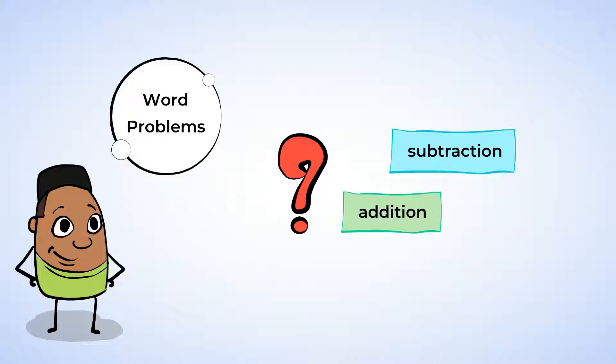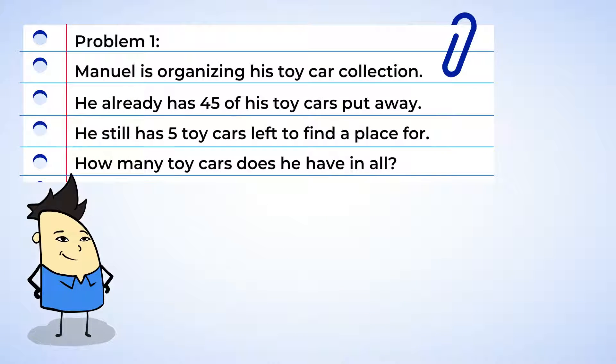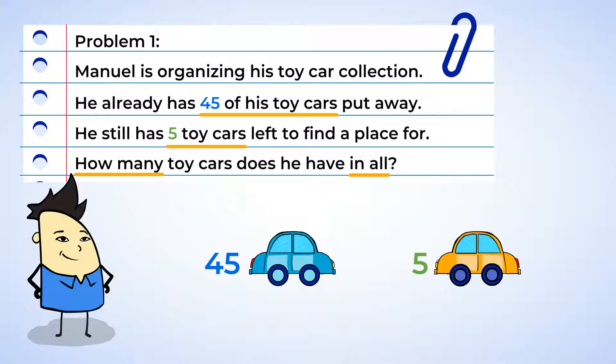We are going to take a closer look at some word problems today. Let's start with Manuel. He is organizing his toy car collection. He already has 45 of his toy cars put away, but he still has 5 toy cars left to find a place for. How many toy cars does he have in all? Here are the cars Manuel has already put away, and here are the cars Manuel still has left to clean up.